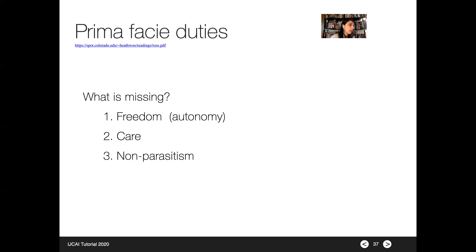Prima Facie Duties are actually a rather popular approach in machine ethics. Importantly, although Ross recognizes by definition that these duties can override each other, he did not go so far as to propose an ordering between the eight duties — which is most important, which is least. If you can satisfy all of them, you should, but if you can only satisfy one of two, which one do you choose? This is the biggest practical problem when implementing Prima Facie Duties in a system that makes moral choices.